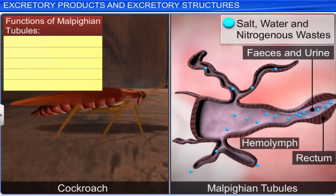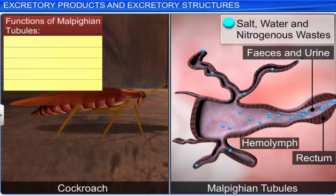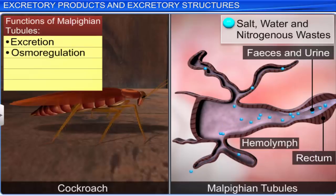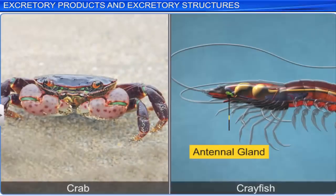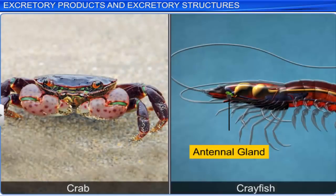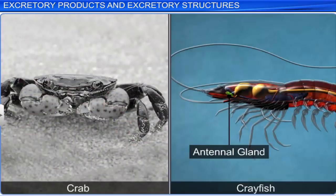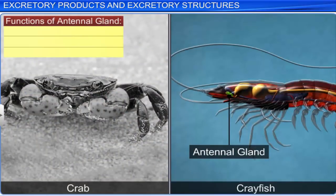Malpighian tubules are excretory structures found in arthropods such as insects and arachnids. These tubules, along with removing nitrogenous wastes, perform the function of osmoregulation. The antennal gland or green gland is the excretory structure in crustaceans such as the crab and crayfish. This gland performs the function of excretion and osmoregulation.